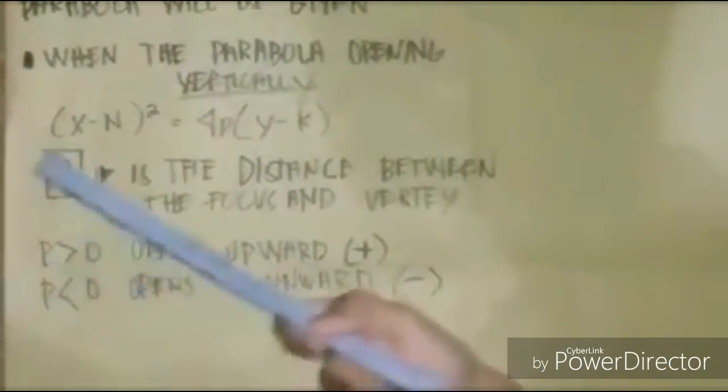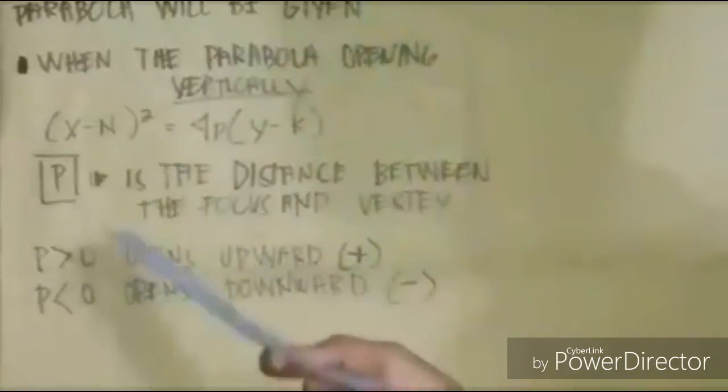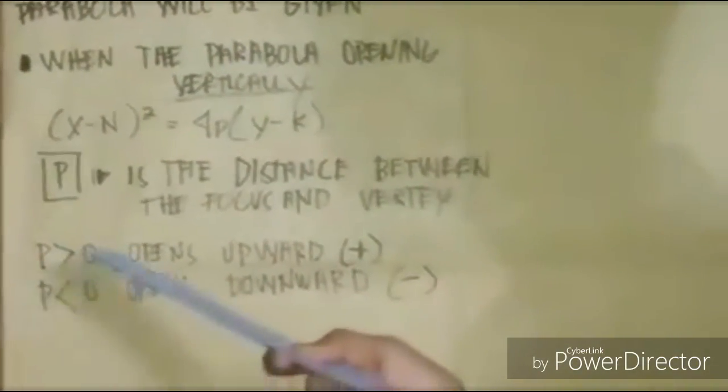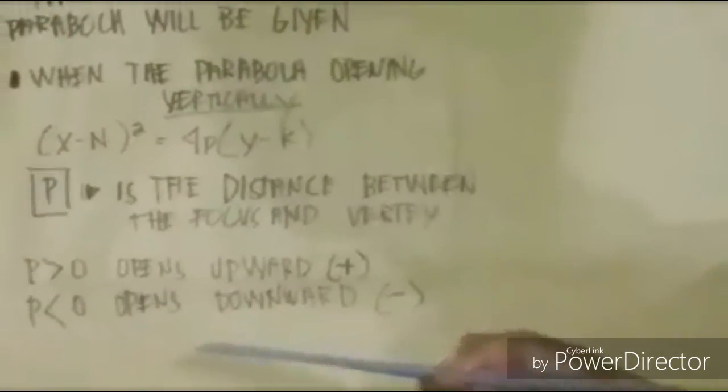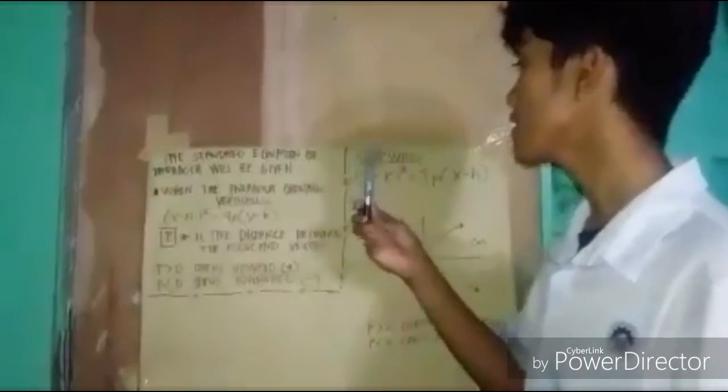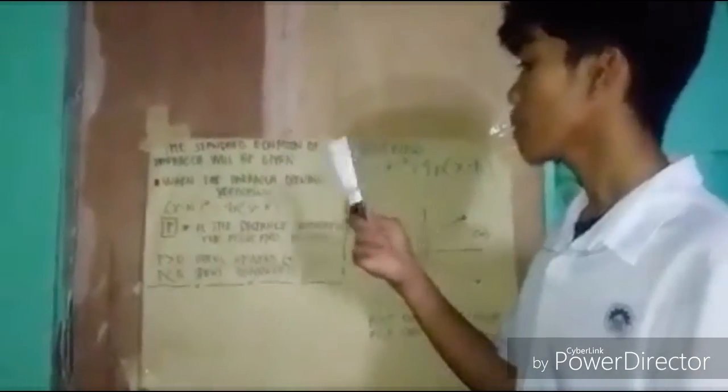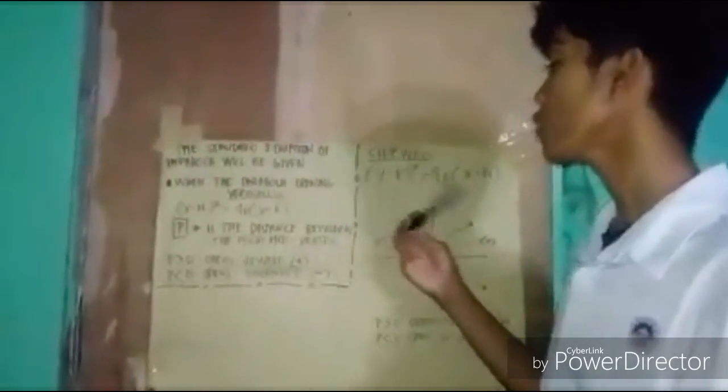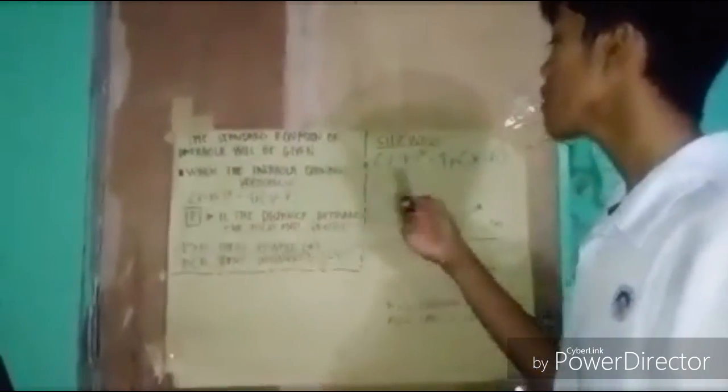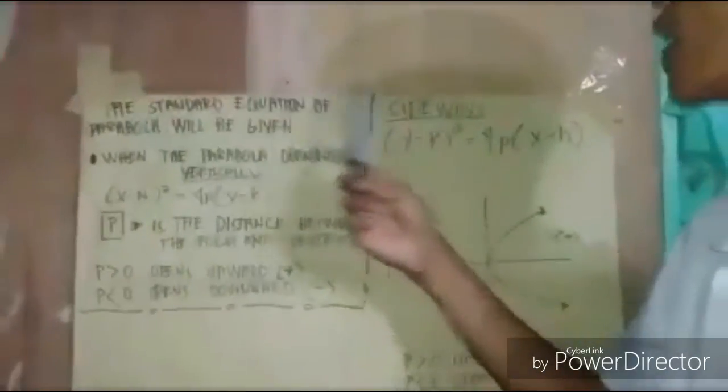Yung p greater than 0 opens upward is positive, and p less than 0 opens downward is negative. Yun guys, the sideways. Kapag nabukas siya na sideways, magiging iba po. Napapansin niyo po, nagiging iba po talaga ang equation.